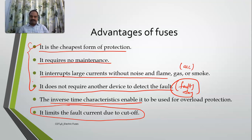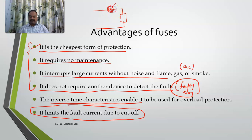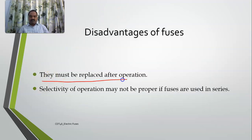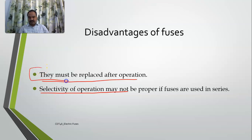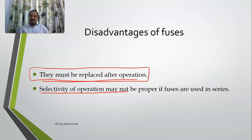The disadvantages of a fuse: when it blows, you must replace it — you need to buy a new one and install it. Fuses must be replaced after every operation. If multiple fuses are used in series, the selectivity of operation may not be proper, which is one of the biggest problems. This is also one of the main reasons why fuses are now being replaced by circuit breakers.